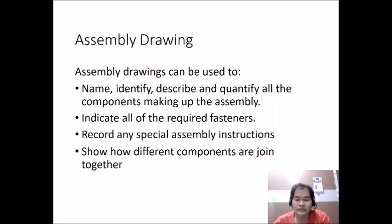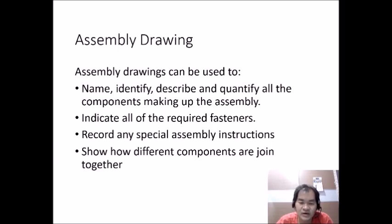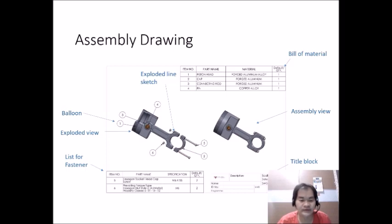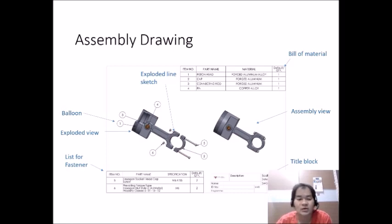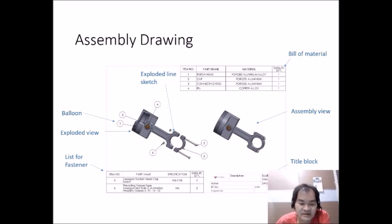An assembly drawing can be used to name, identify, describe, and quantify all the components making up the assembly, indicate all required fasteners, provide special assembly instructions, and show how different components are joined together. The left hand side shows an exploded view while the right hand side shows the assembly view — the assembly view means every part joined together, while in the exploded view all parts are separated. The drawing also includes balloons, a list of fasteners, a bill of materials, and a title block.